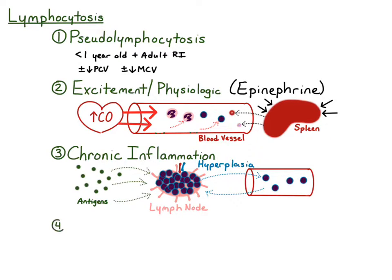The fourth cause of lymphocytosis is lymphoid neoplasia, and this is going to be its own video, so stay tuned for that.